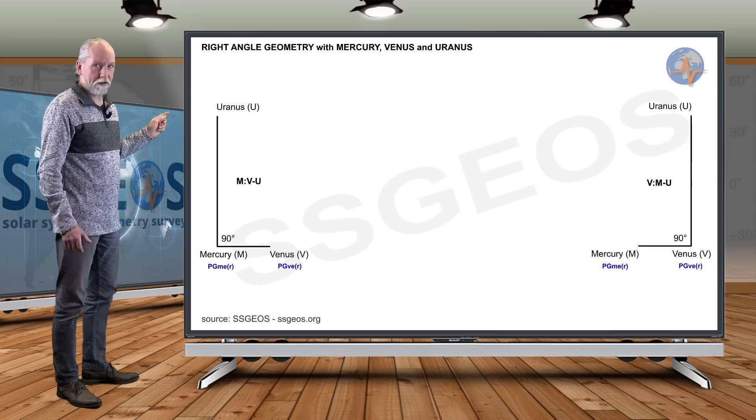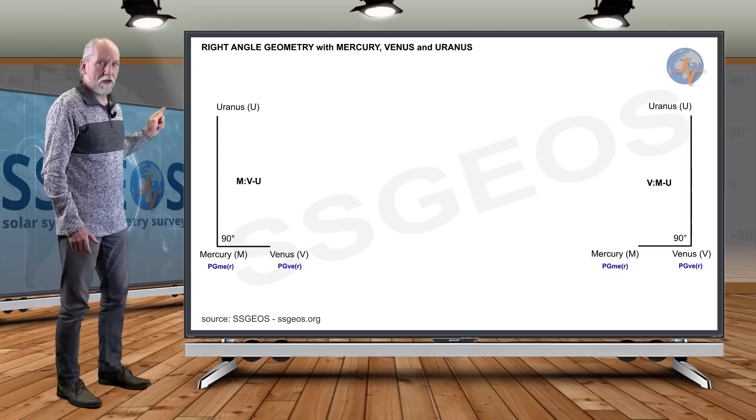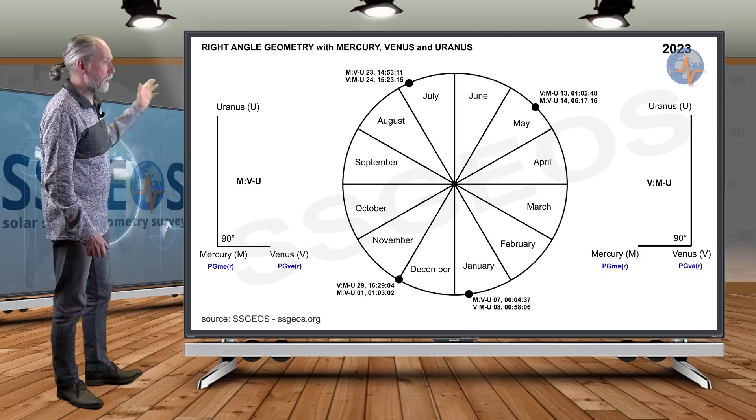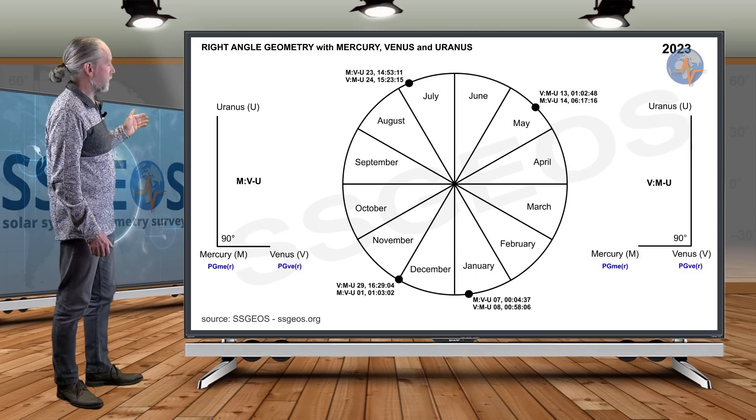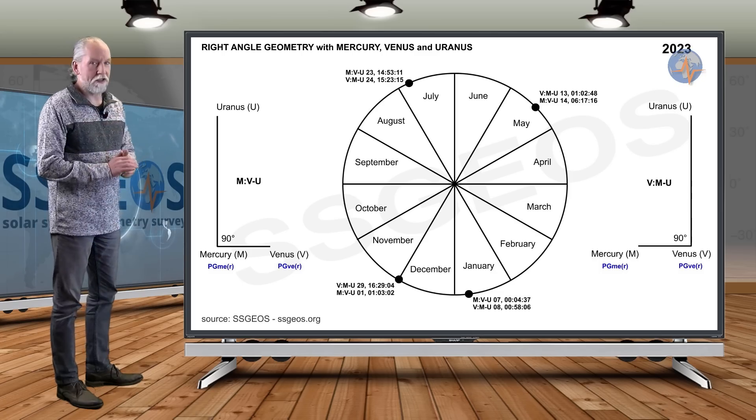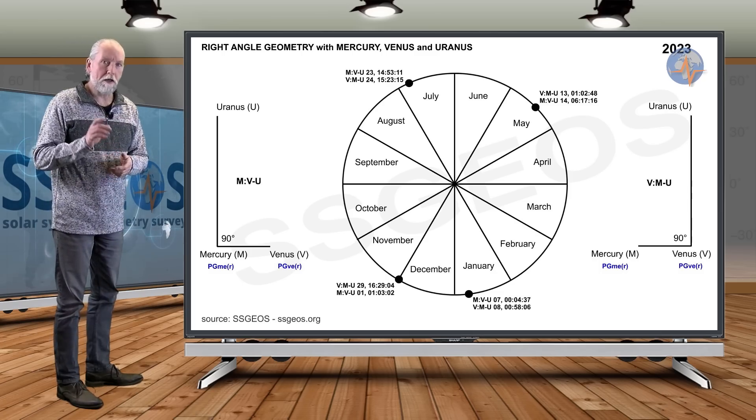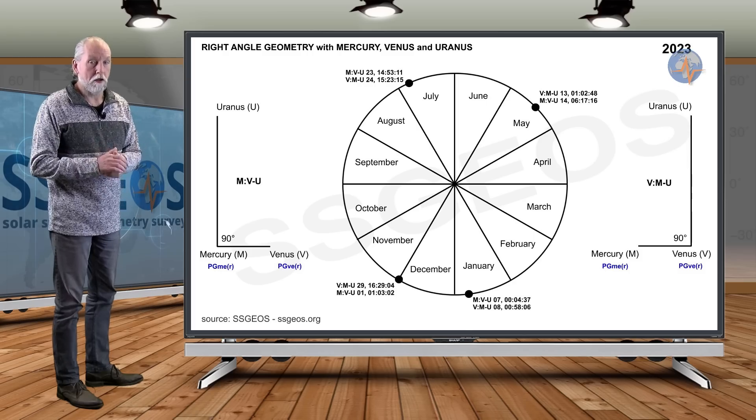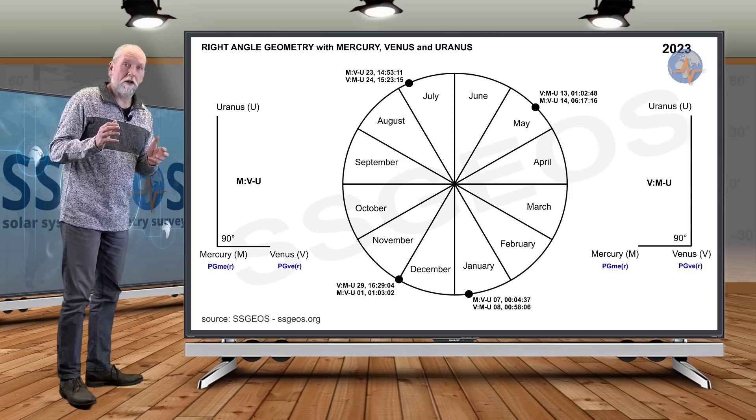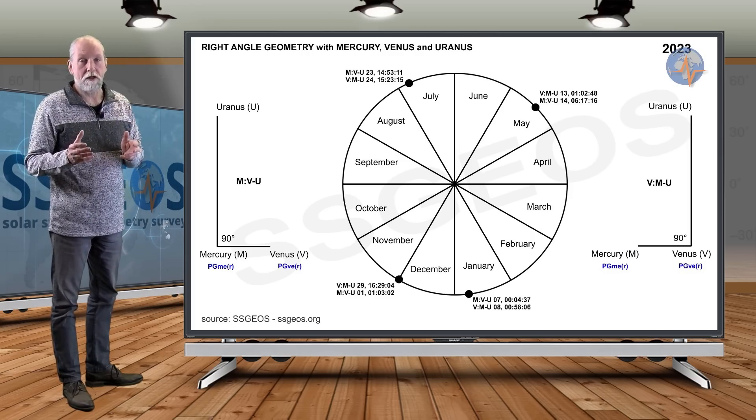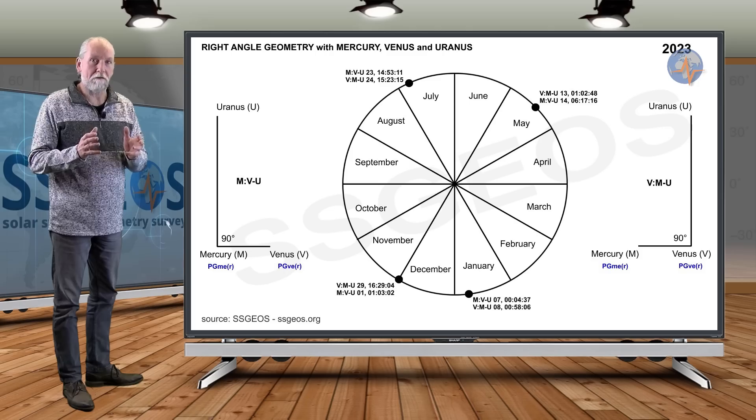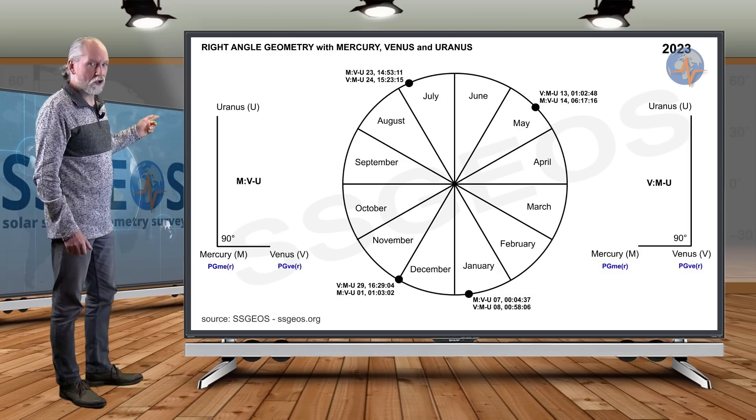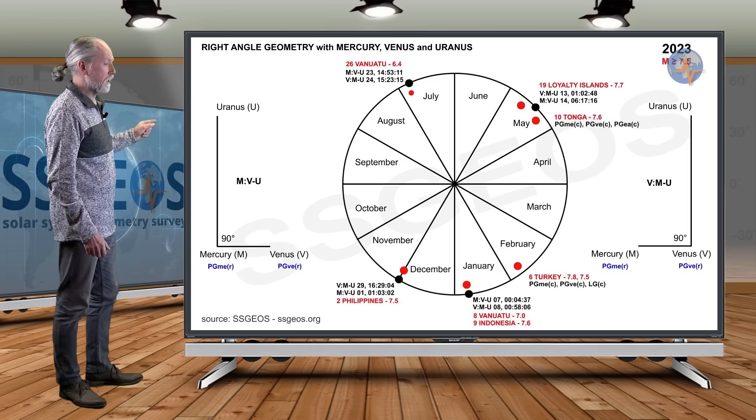Now let's have a look at this particular geometry as it happened last year in 2023. We see the year and we see that it happened four times: in January, in May, July, and the end of November, early December. Now here it gets interesting. If we look at major earthquakes magnitude 7.5 and larger last year, it happened six times. But if we consider the large earthquakes in Turkey on 6 February, 7.8 and 7.5, as a single event on one day, we had five major events on five days.